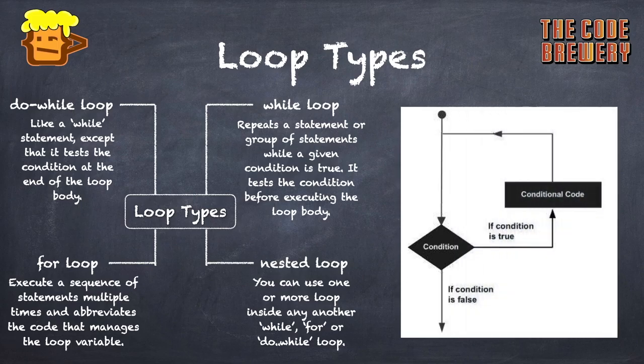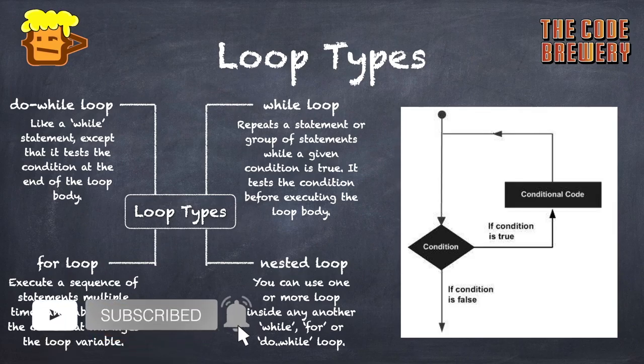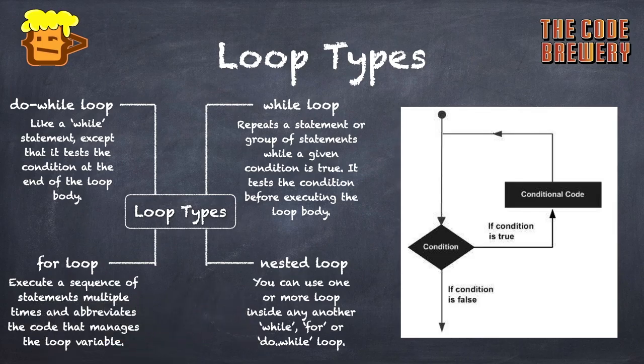First, the while loop repeats a statement or group of statements while a given condition is true, and tests the condition before executing the loop body. Second, the do-while loop is like a while loop except it tests the condition at the end of the loop body — it will always loop at least once even if the condition is false. Third, the for loop executes a sequence of statements multiple times.